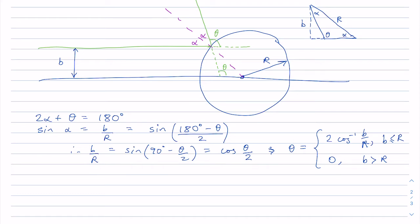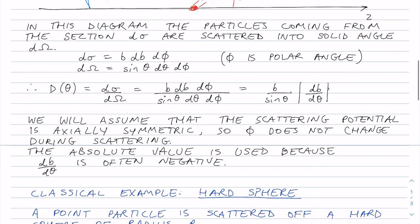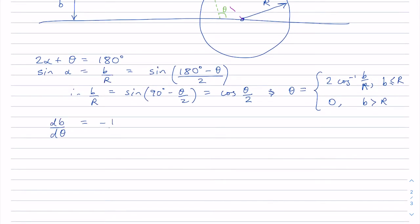But moreover, we can now talk about db dtheta, which we're going to need to put into our differential scattering formula here. So the differential cross-section here is b over sin theta times the absolute value of db dtheta, which we've just worked out.